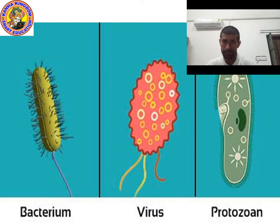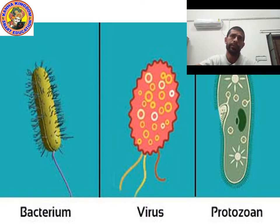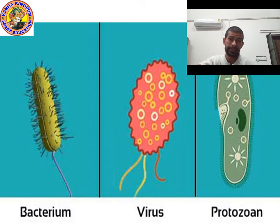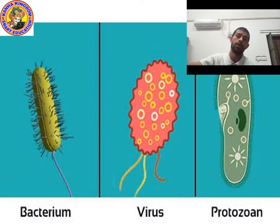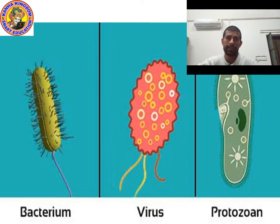Bread mold is also a fungi which you see on bread. So we know that malaria, HIV, and chickenpox are all communicable diseases that happen due to pathogens. Now let's talk about some diseases like TB, common cold, and pneumonia — how they spread, what causes them, and how to protect ourselves.